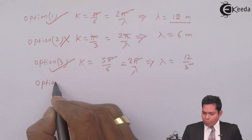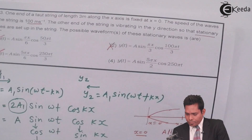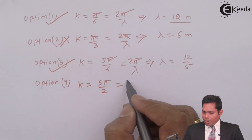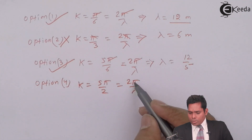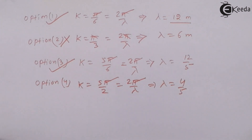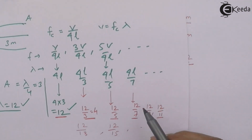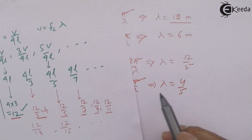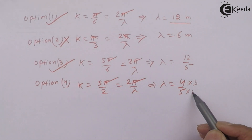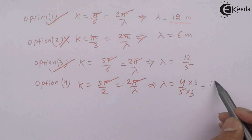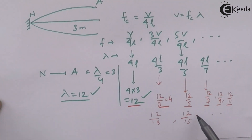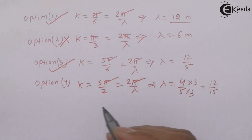For option 4, k = 5π/2. Using k = 2π/λ gives λ = 4/5. Multiplying numerator and denominator by 3 gives λ = 12/15. Since 15 is an odd number, 12/15 is in our list of valid wavelengths. So option 4 is also correct.